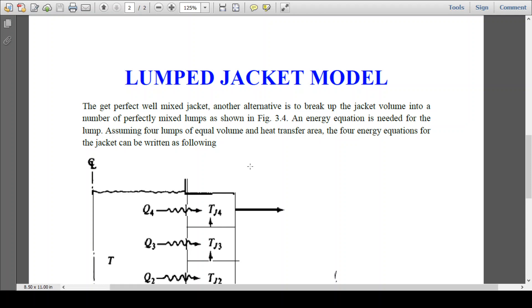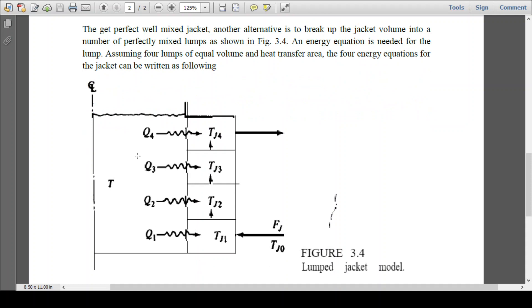So another alternative way is that we can divide the jacket into several volumes of equal volume each. So let's say this is the reactor wall and here we have outside of that we have the jacket. So previously we have considered the entire thing is one jacket.